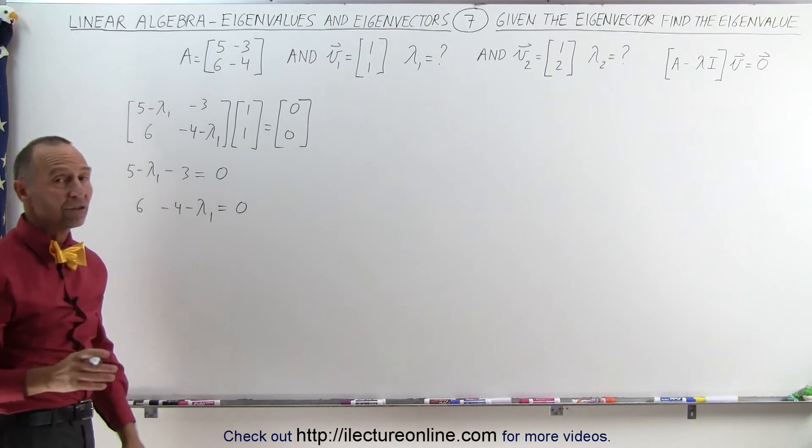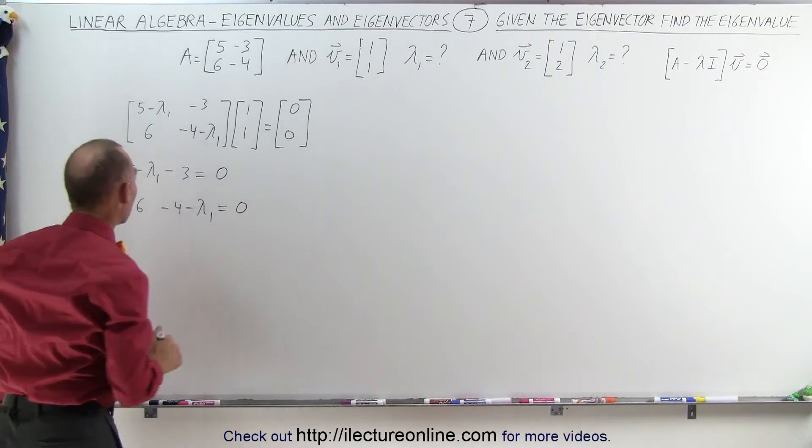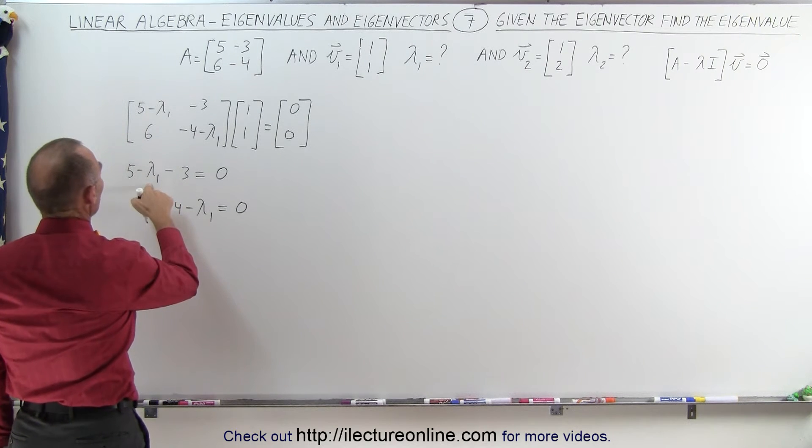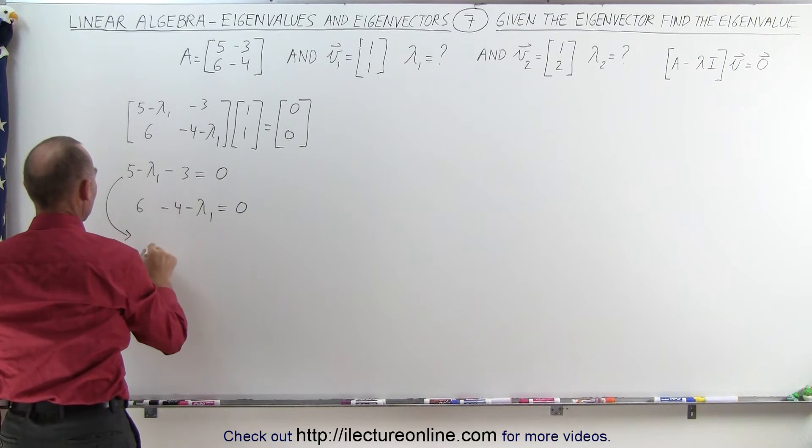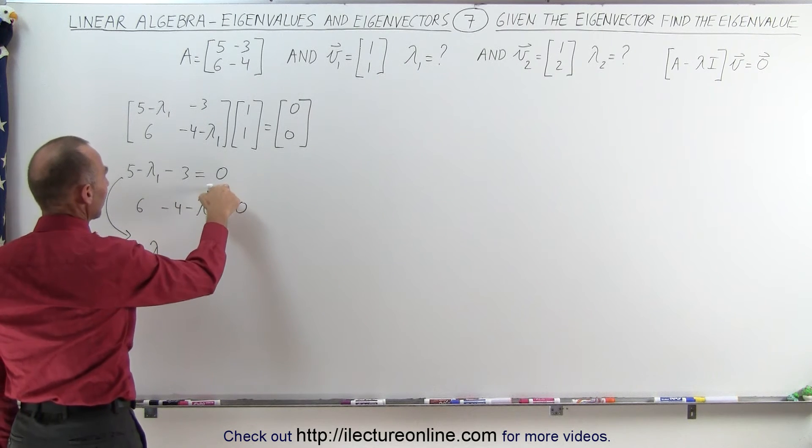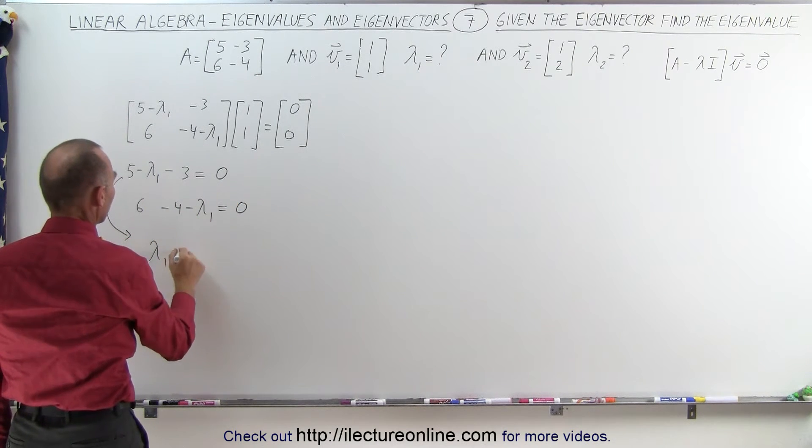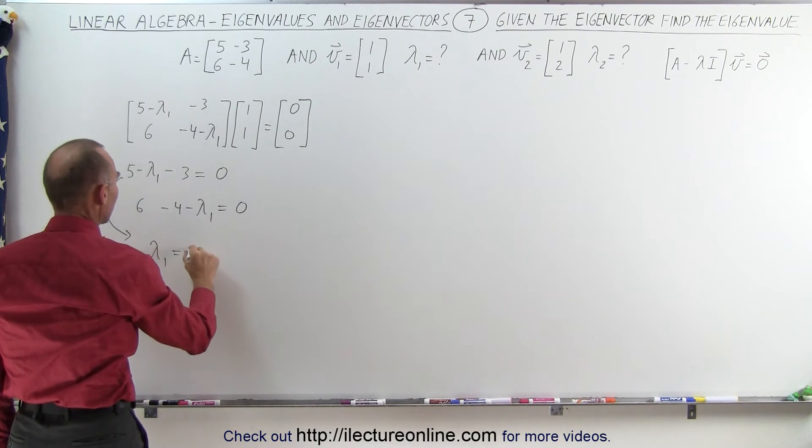Here are two equations that should allow us to find λ₁. Solving for λ₁, moving this across, we can say that for the first equation λ₁ equals 5 minus 3, which is 2.